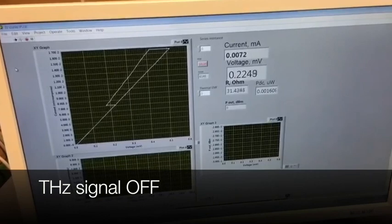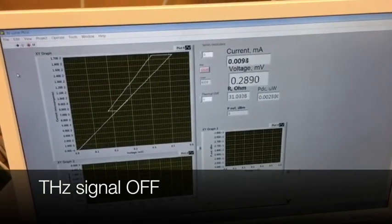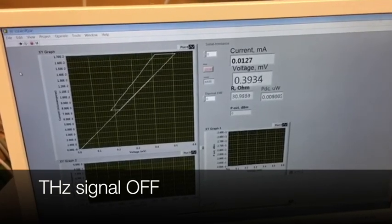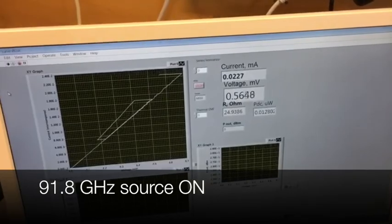As one can see from this IV curve, the larger the bias current, the larger the voltage difference between on and off mode. And that's what is called the direct detection response.